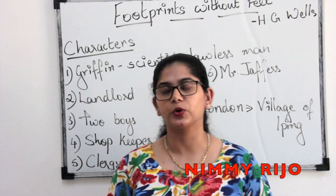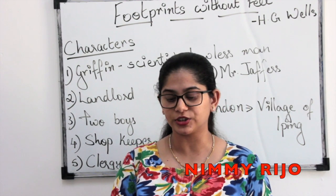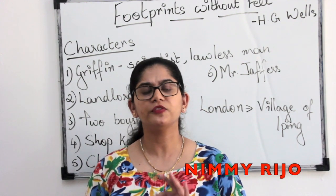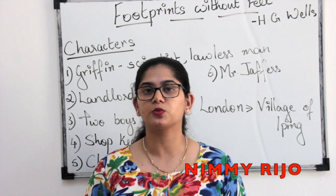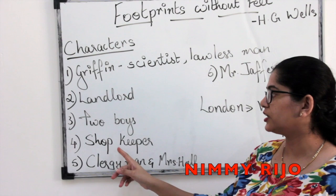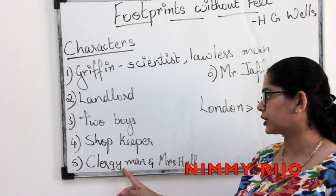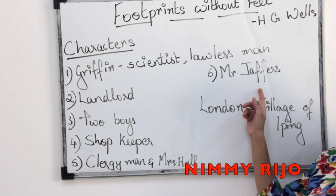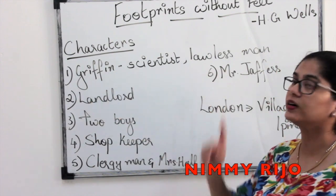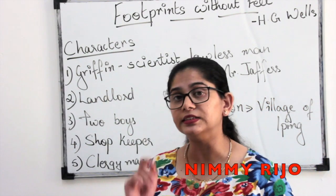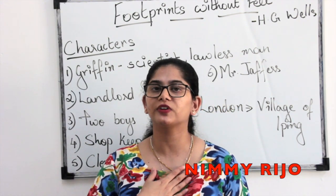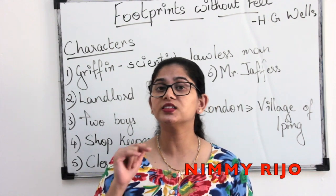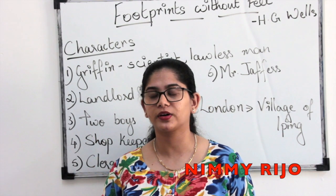Regarding the questions of this chapter, the questions can be like: 'Griffin was rather a lawless person. Comment.' You can very clearly say yes, he is a lawless person. Think about the things he did — initially he burned a landlord's house, then he robbed the shopkeeper and took things from them, he robbed the clergyman, Mrs. Hall was scared because of him, and Mr. Jaffers the police officer was also made like a fool. So all these things very clearly say yes, Mr. Griffin was a lawless person. But yes, he was also a very intelligent and brilliant scientist — he should have used this brilliancy for something else.